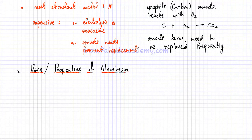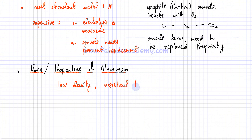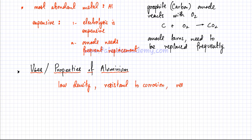Aluminium is the most abundant metal on the surface of the planet. Its useful properties include: first, it is very lightweight with a low density compared to other metals. Second, it is resistant to corrosion because aluminium oxide forms a tough, non-porous coating that protects it and prevents reaction with oxygen. Third, it is a very good conductor of both heat and electricity, because aluminium loses three electrons, giving a larger delocalized electron cloud.